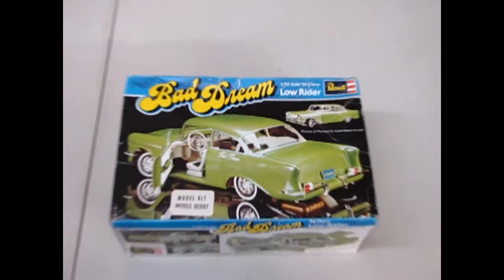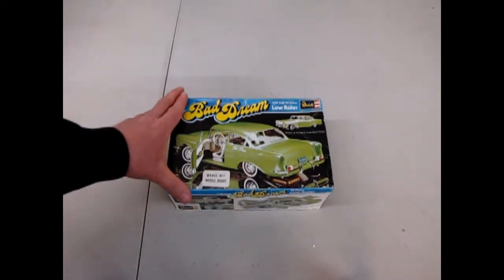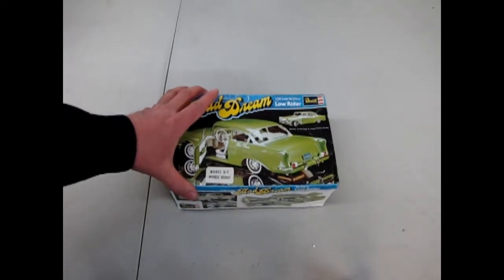So now, let's go down and check out this classic. Alright boys and girls, let's rip the top off this real moldy oldie going all the way back to 1976. The Ravel Bad Dream 56 Chevy Lowrider.